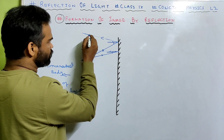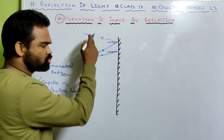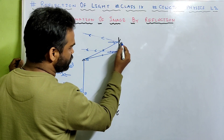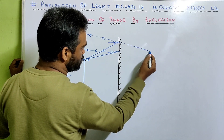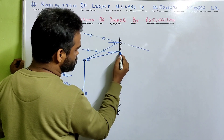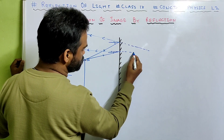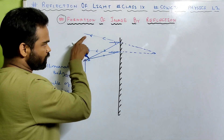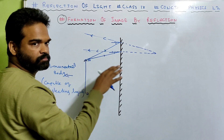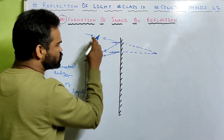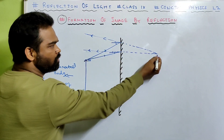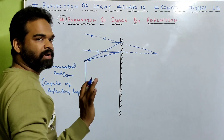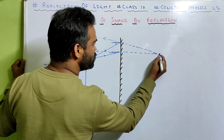Now, these two reflected rays — if you look carefully — are diverging rays. They will never meet. But if you proceed back, see carefully, they appear to meet at a point. It gives an impression that these two rays have started from this point only. They appear to meet behind the mirror — they don't actually meet, they appear to meet behind the mirror. So this point A will be formed over here as A dash.